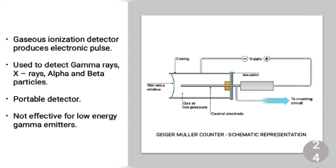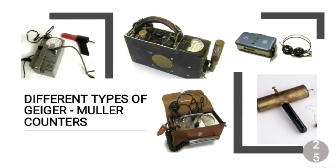The Geiger Muller counter is mainly used to detect gamma rays, X-rays, alpha and beta particles. An advantage is that it is a portable detector, so you can carry it anywhere. It is much cheaper compared to other instruments. The main drawback is that it is not effective for measuring low-energy gamma emitters. Various forms of the Geiger Muller counter have been used over the years, including early versions.